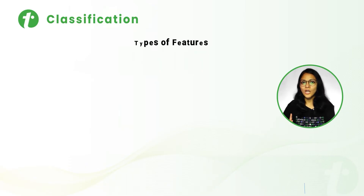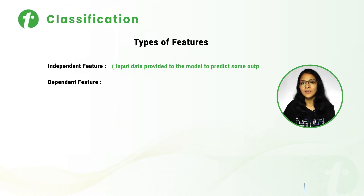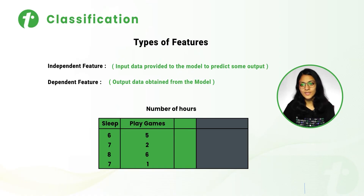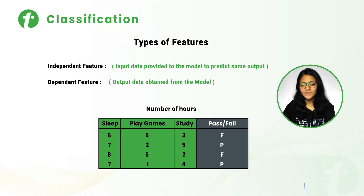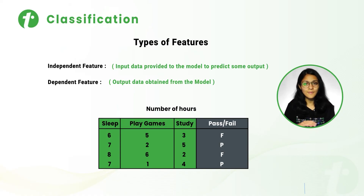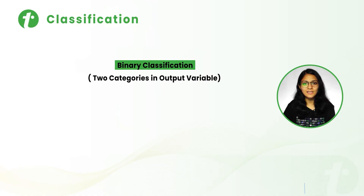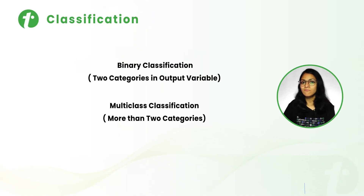Let's discuss classification with an example. We have two types of features: independent features — all the input data provided to the model — and dependent features — the output we obtain. Here, the number of hours for sleep, playing games, and study are the independent features. The output, whether a student is going to pass or fail, is the dependent feature. Since we have only two categories in the output, this is binary classification. If we had more than two categories, it would be multi-class classification.